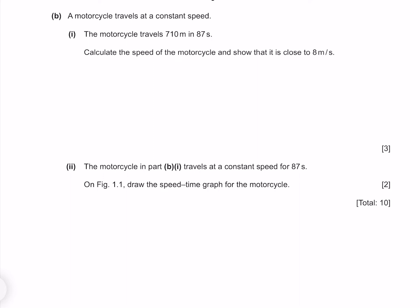A motorcycle travels at a constant speed, the motorcycle travels 710 metres in 87 seconds. Calculate the speed of the motorcycle and show that it is close to 8 metres per second. Speed is equal to distance over time. Our distance is 710 and our time is 87 seconds, which gives me 8.16 metres per second, which is close to 8 metres per second.